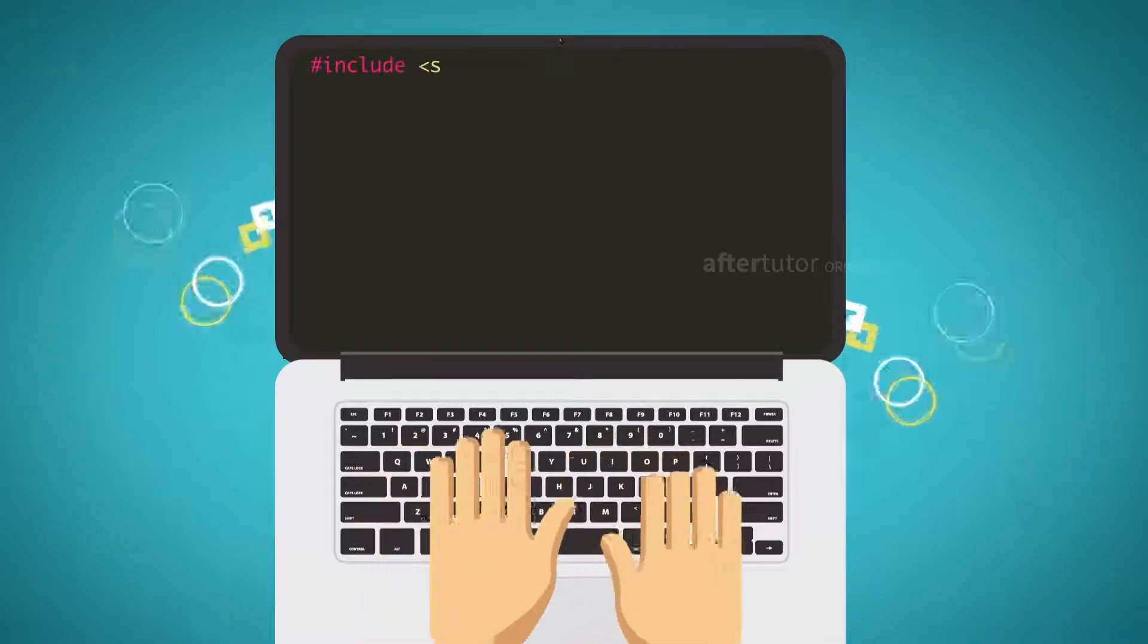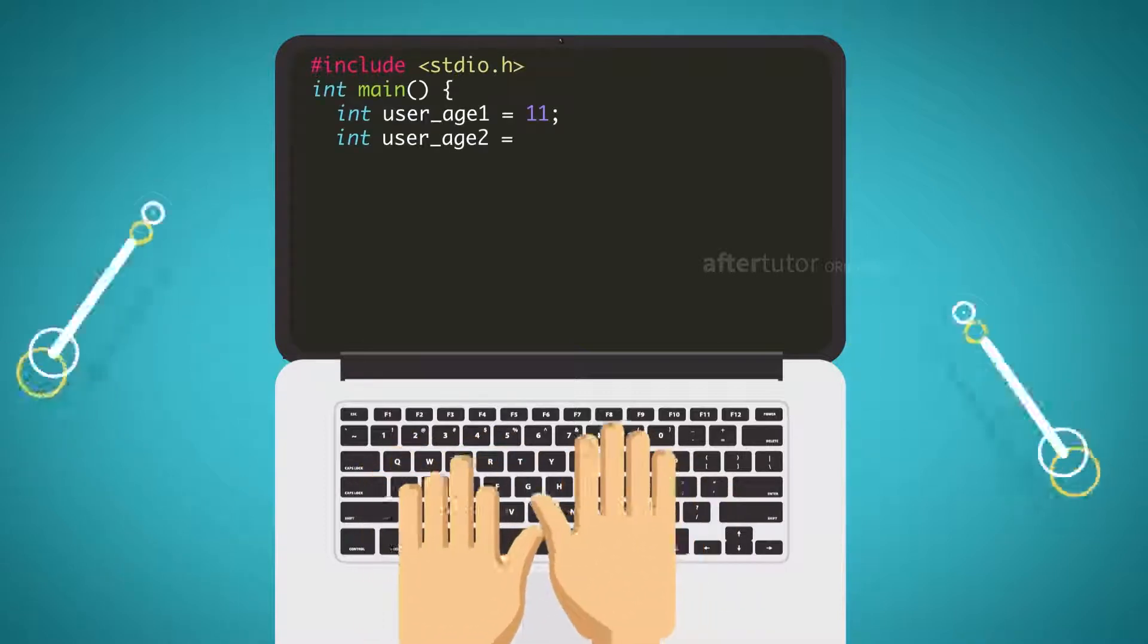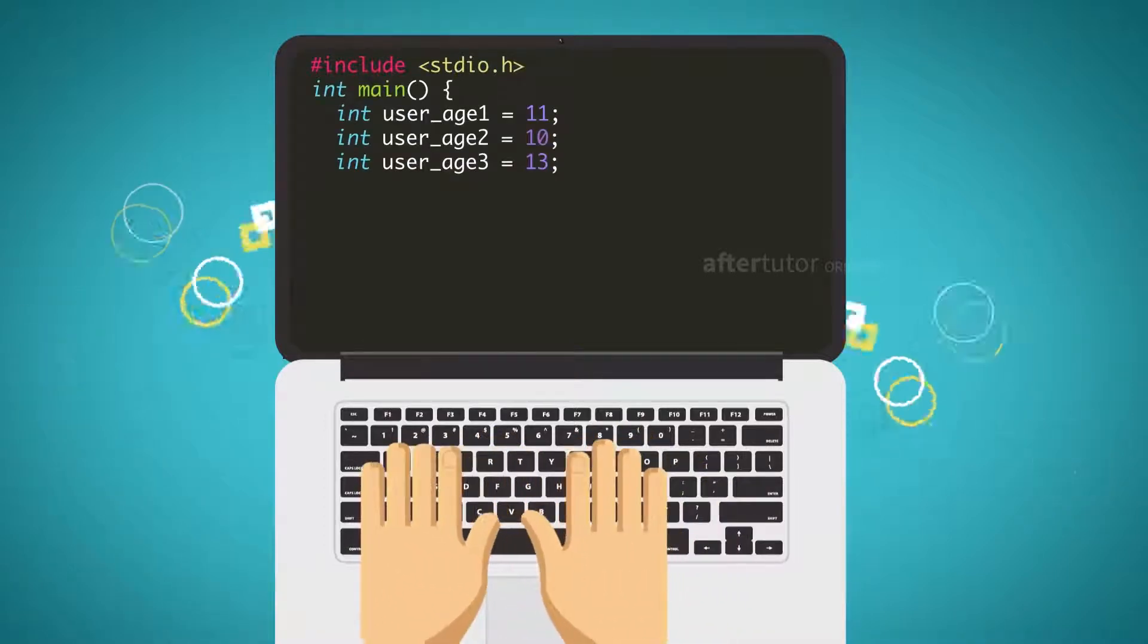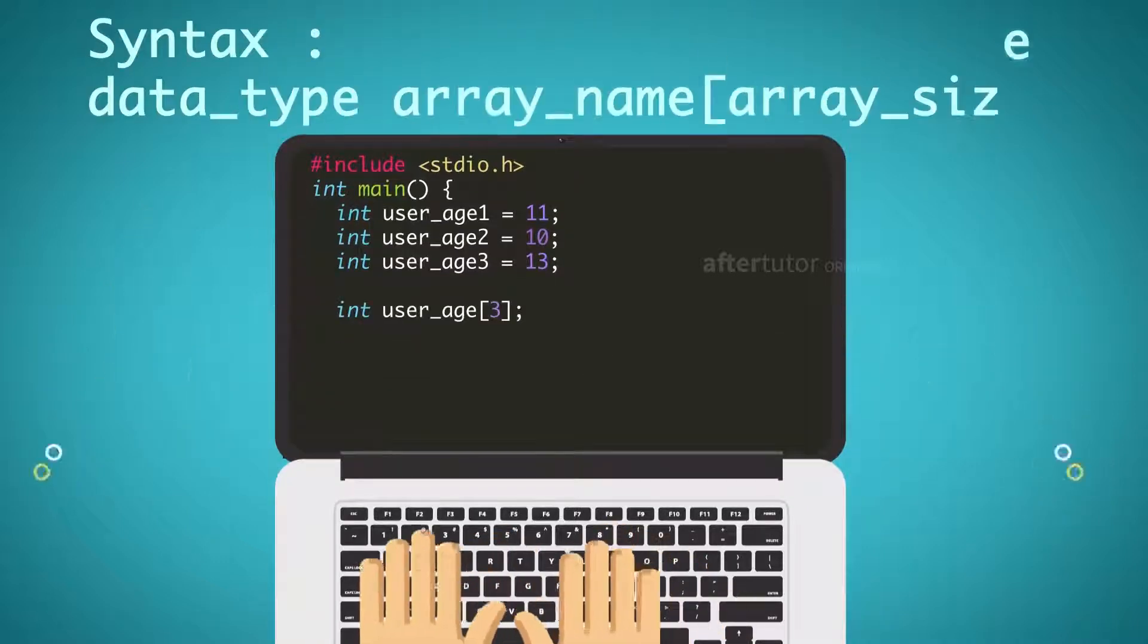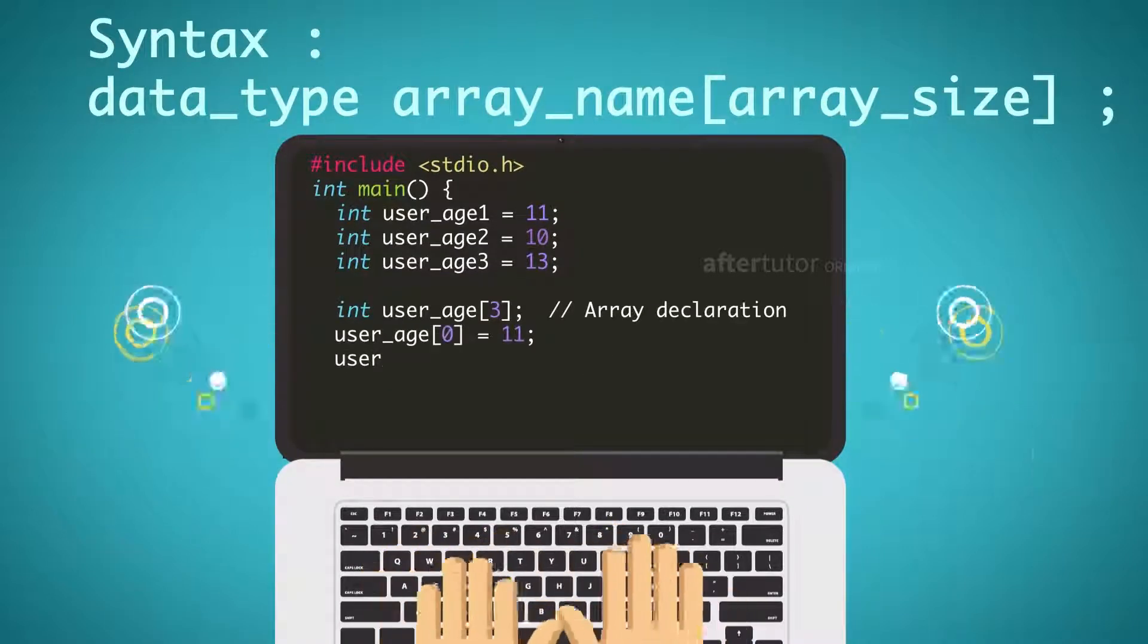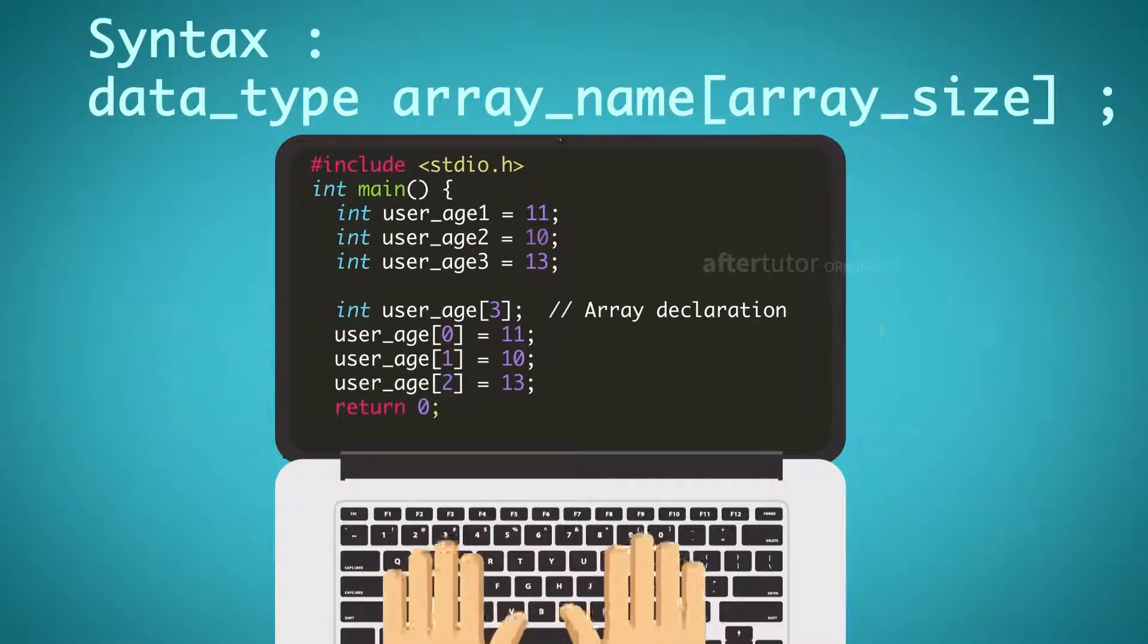For example, the coder declares three user age separately in different line. To improve the readability of program, coder declares those ages in the form of array in single variable.